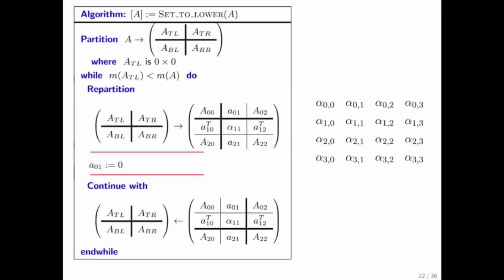Okay, let's move on. And let's look at an algorithm that takes a matrix that inherently has to be square, because triangular matrices are square, and sets the upper triangular part of the matrix to zero, making it a lower triangular matrix. So think of it as the matrix originally has some values in it. And what we would like to do is set the values above the diagonal to zero.